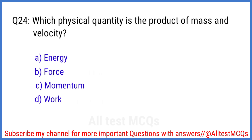Q24. Which physical quantity is the product of mass and velocity? The right answer is option C. Momentum.